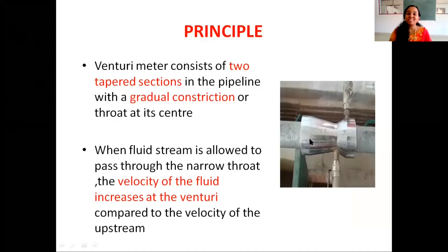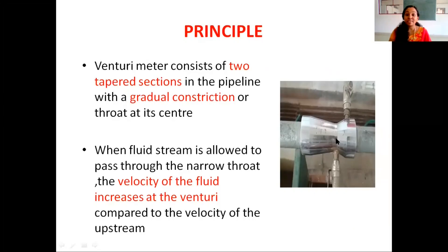Venturi meter consists of two tapered sections. Here you can see one tapered section and the other section is here. In between these two tapered sections, there is a gradual constriction and this gradual constriction is known as the throat.